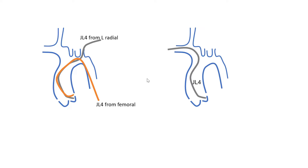From left radial, old textbooks used to say you do not need to downsize your catheter compared to femoral. In my experience, that's not true. From left radial, you do also elongate the catheter, so the tip will tend to point down — maybe a little less than from right radial, but it will point down. My preference from left radial is to also downsize the Jutkins left catheter by a half. For guiding catheters, particularly the EBU type and the Ikari, I do not downsize compared to femoral, but that's a separate discussion.